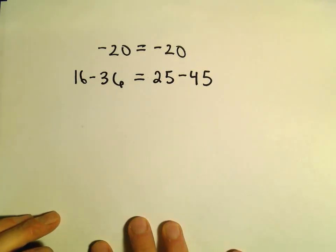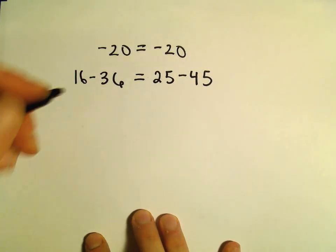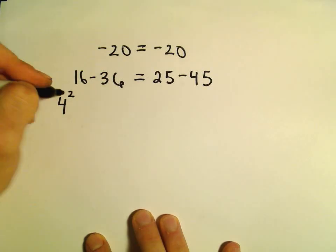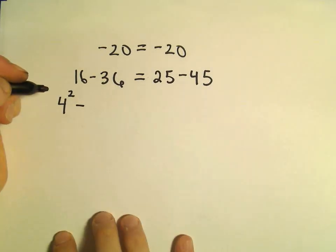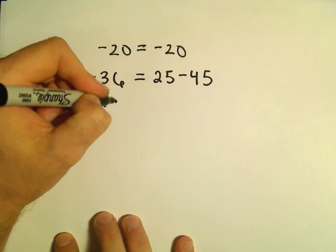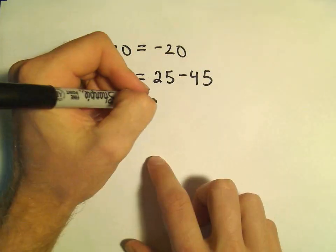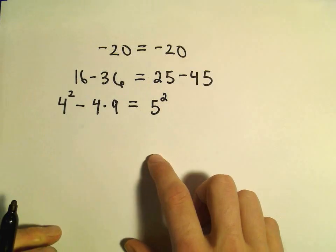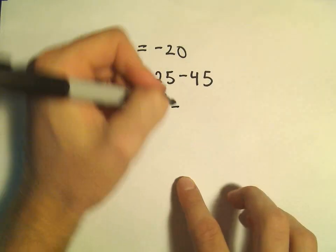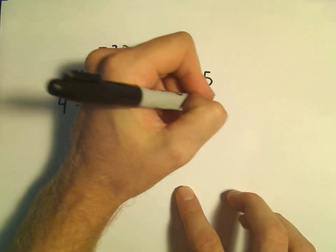Now I'm going to rewrite things a little bit more. I'm going to rewrite 16 as 4 squared, and 36 as 4 times 9. On the right side, I'll rewrite 25 as 5 squared, and 45 as 5 times 9.